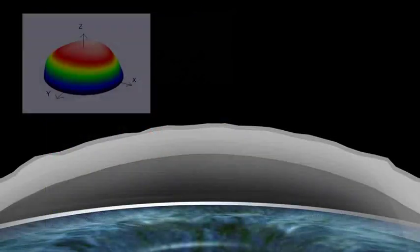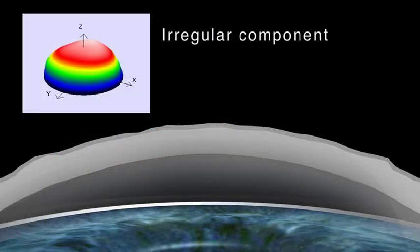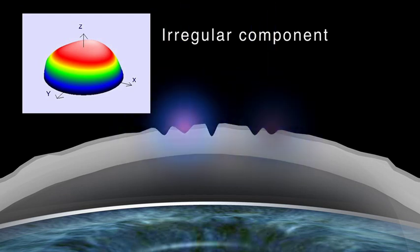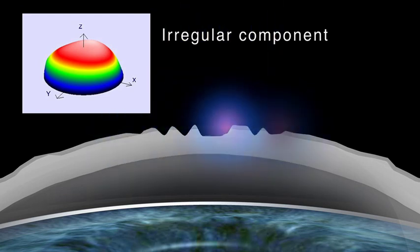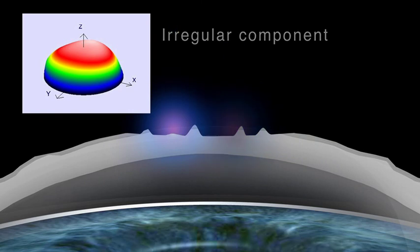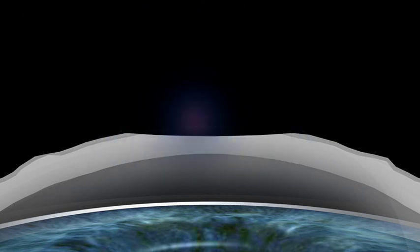TransPRK in combination with corneal wavefront is preferable for patients who need retreatment after radial keratotomy or corneal transplantation. Moreover, it can be used to treat haze, scarred corneal tissue, and keratoconus before corneal collagen cross-linking.